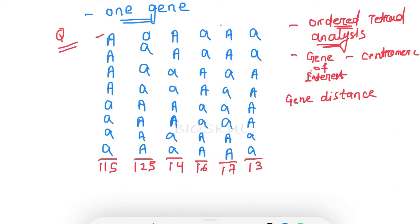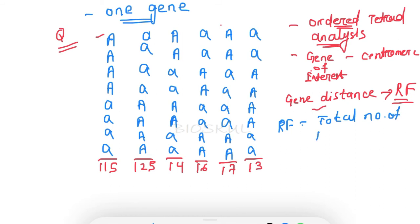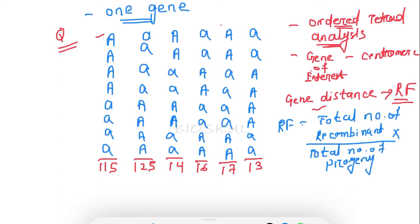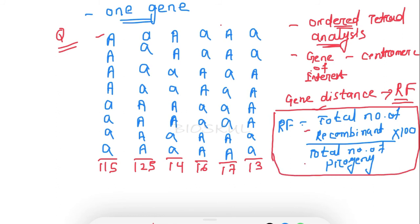The gene distance is calculated in terms of recombination frequency — as I explained in my three-point cross video. The recombination frequency between the gene and the centromere represents the distance between them. The formula for recombination frequency is: total number of recombinants divided by total number of progeny, multiplied by 100. We calculate it by dividing total recombinants by total progeny, then multiplying by 100.